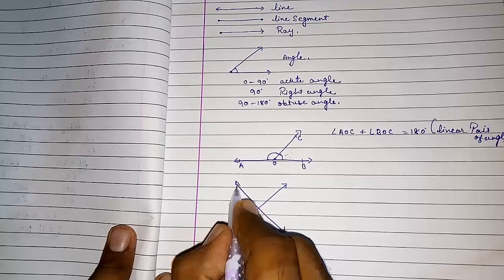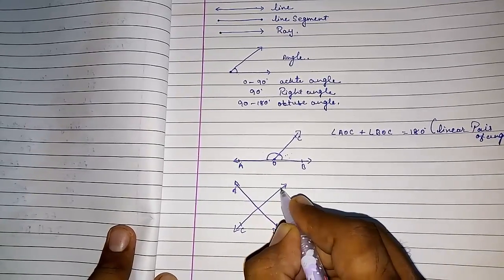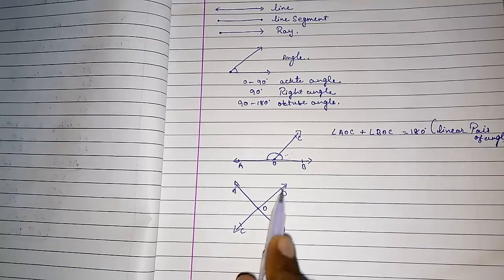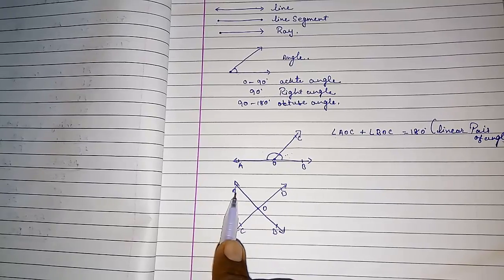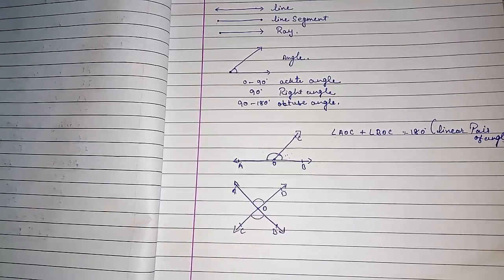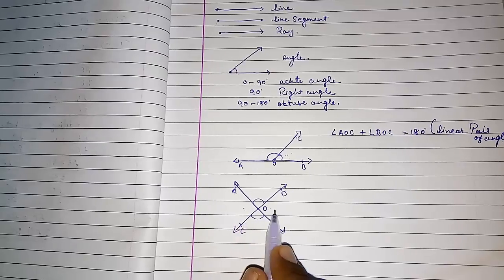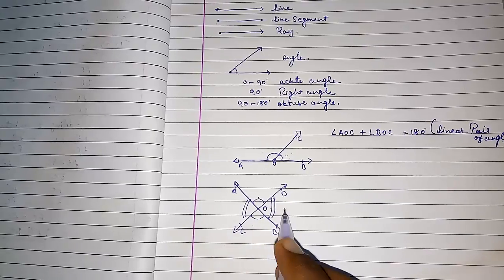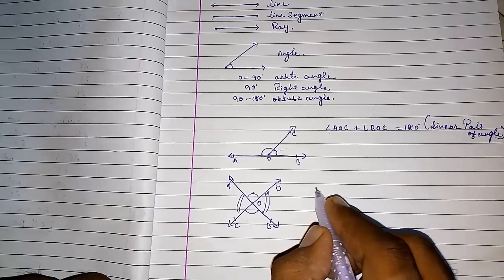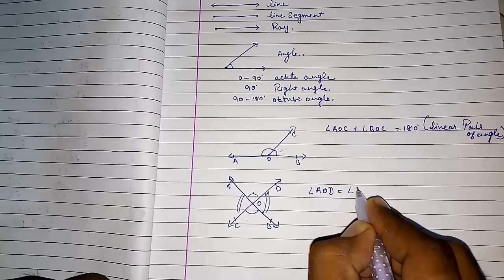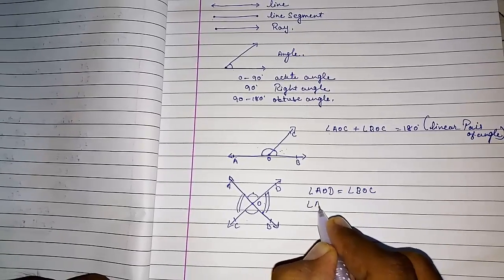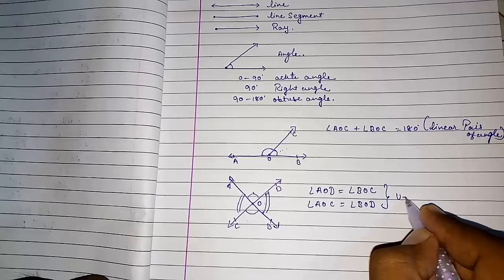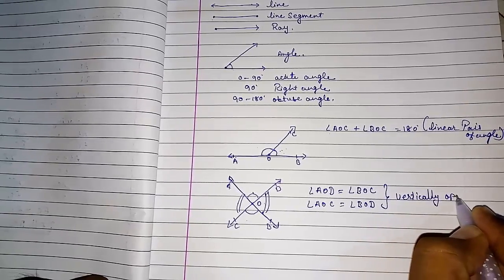When two lines intersect — name them AB and CD, intersecting at point O — four angles are formed: AOD, DOB, BOC, and COA. The vertically opposite angles are always equal: angle AOD equals angle BOC, and angle AOC equals angle BOD. These are called vertically opposite angles.